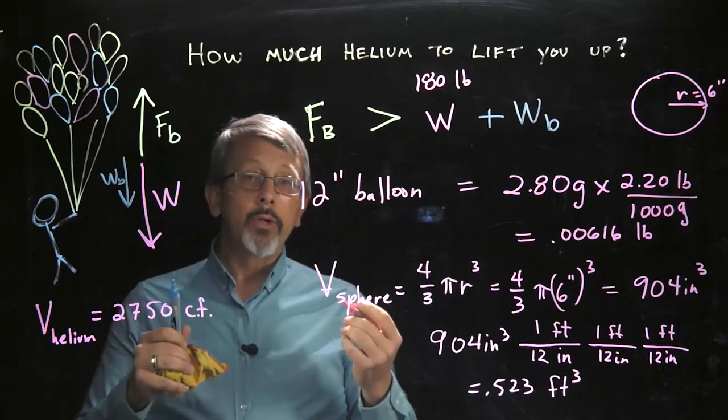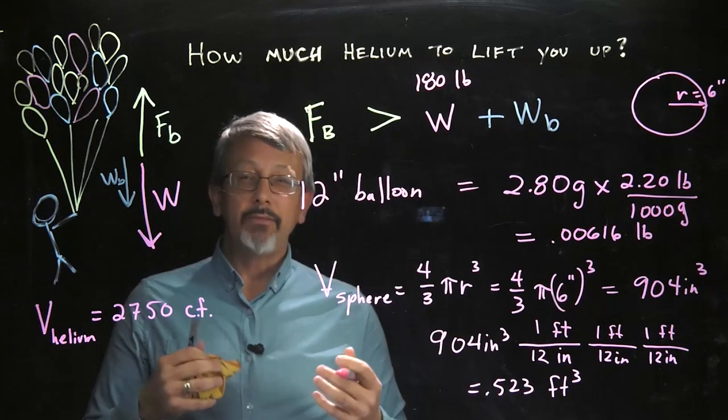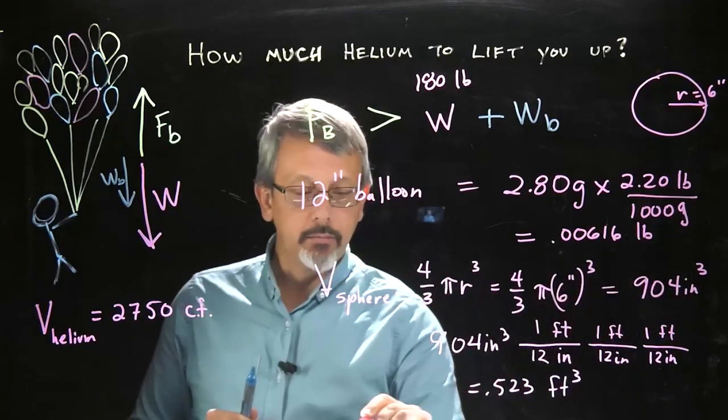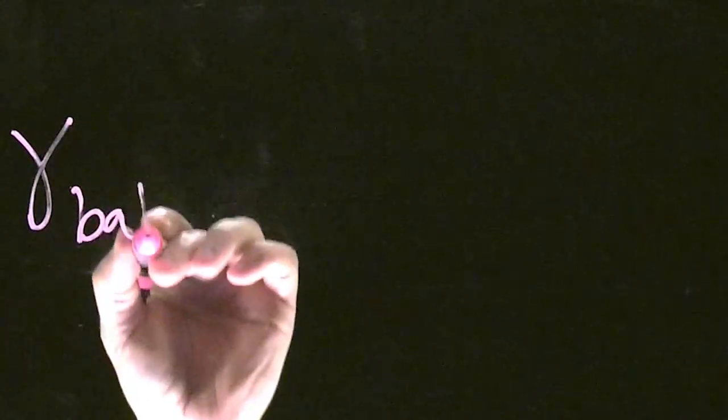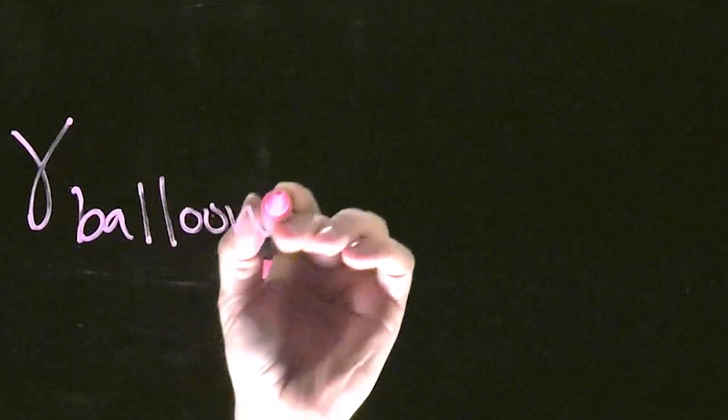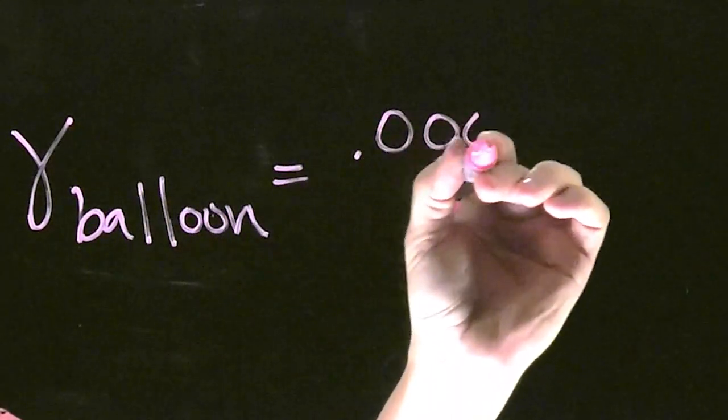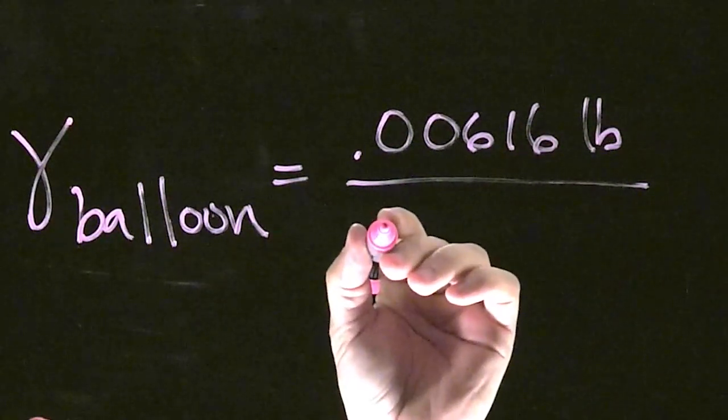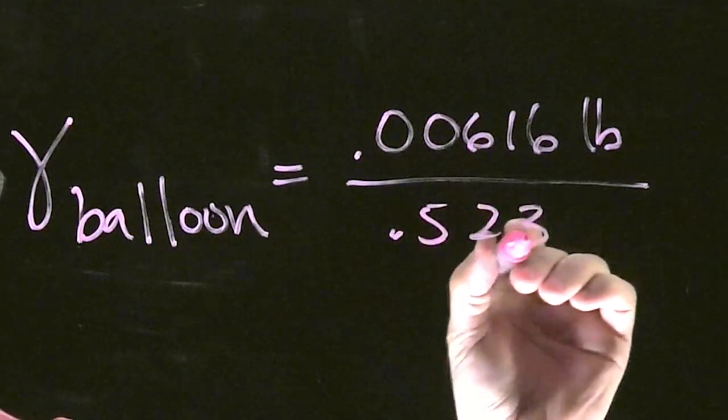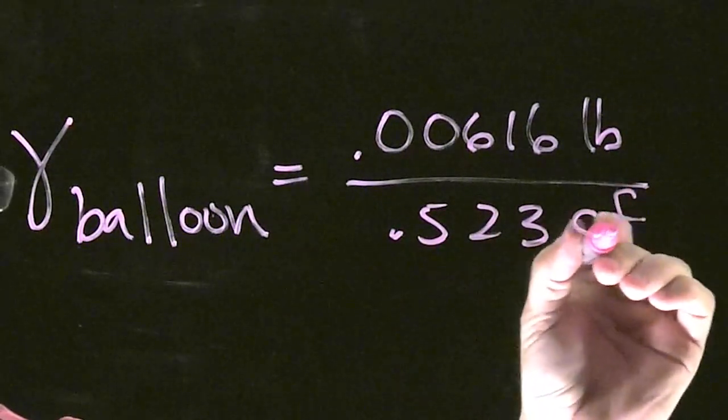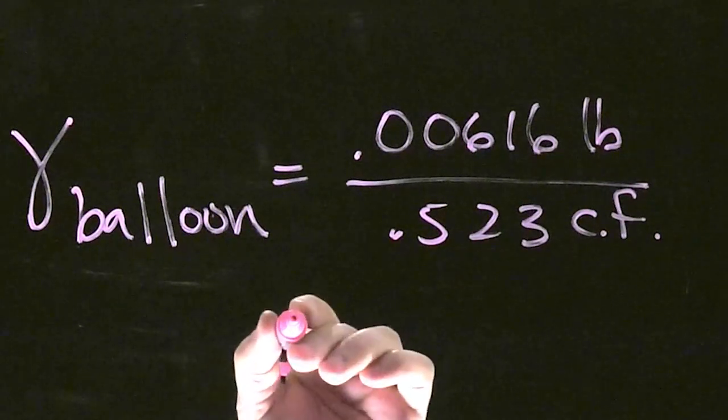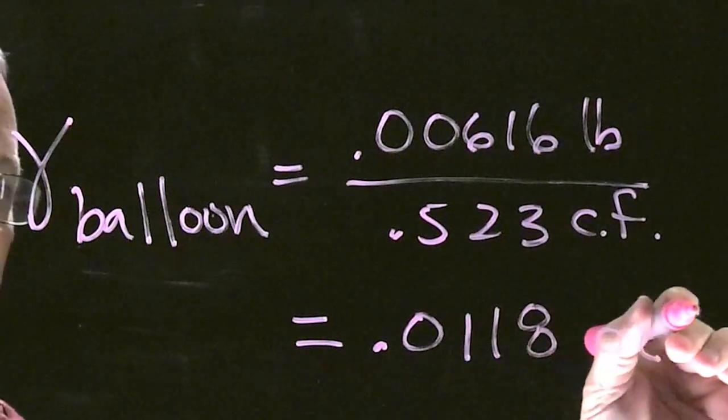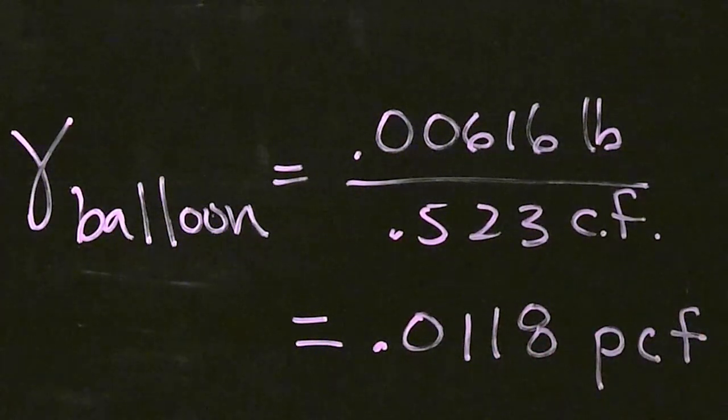Now we have a very useful relationship here, effectively the specific weight of the balloons, that I can relate the weight of a balloon. So I'm going to put specific weight of a balloon. Where we have the weight of the balloon, 0.00616 pounds, divided by the volume of the balloon, 0.523 cubic feet. And when I pull out that value, I get 0.0118 pounds per cubic feet, or PCF.